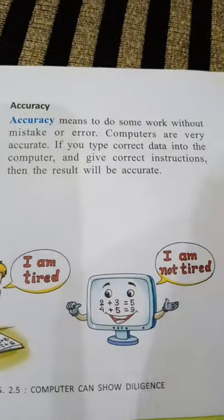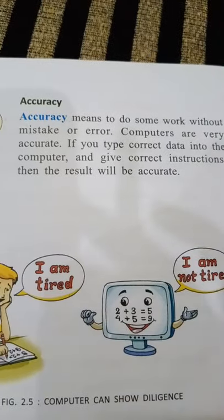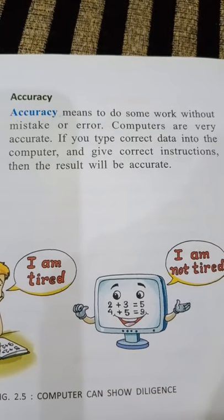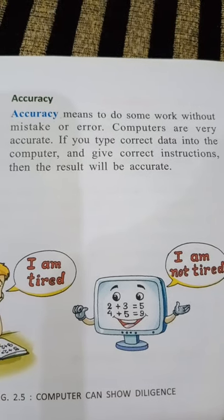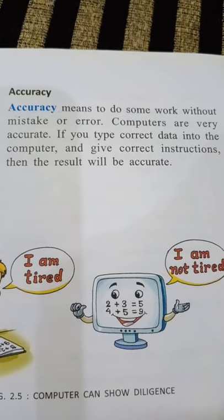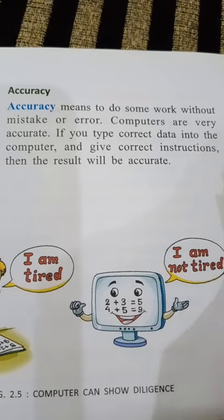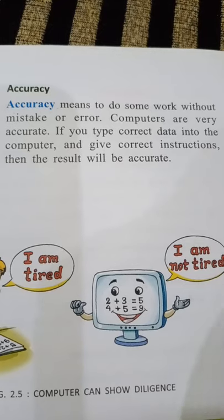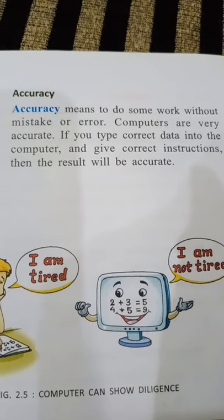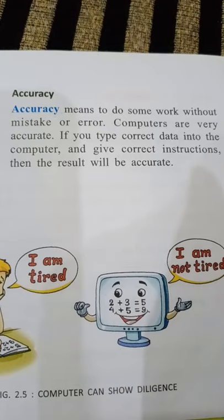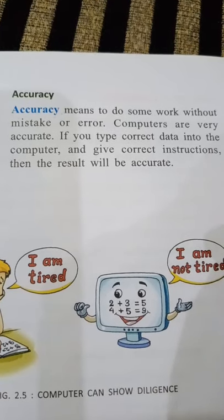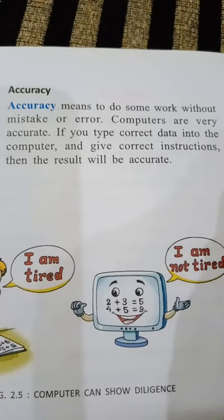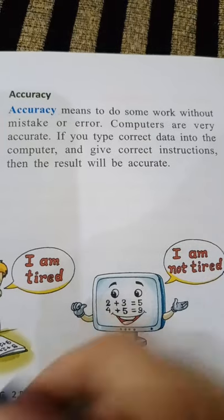Another characteristic of a computer is Accuracy. Accuracy means to do some work without mistakes or errors. If we give it correct input, then it will give us the correct answer. But if we give it wrong input, then it will give wrong results. The computer will give output without any error when given correct instructions.